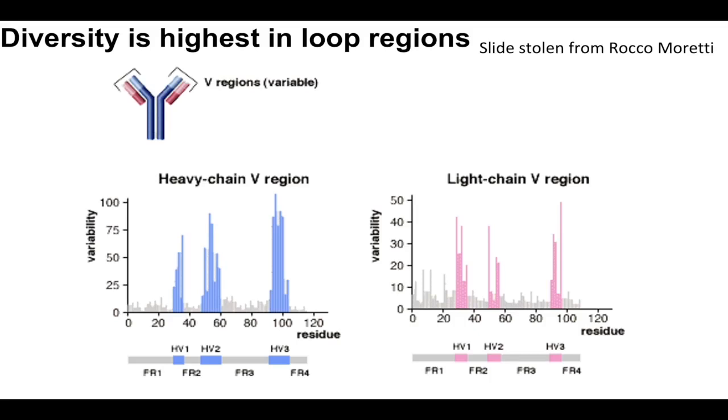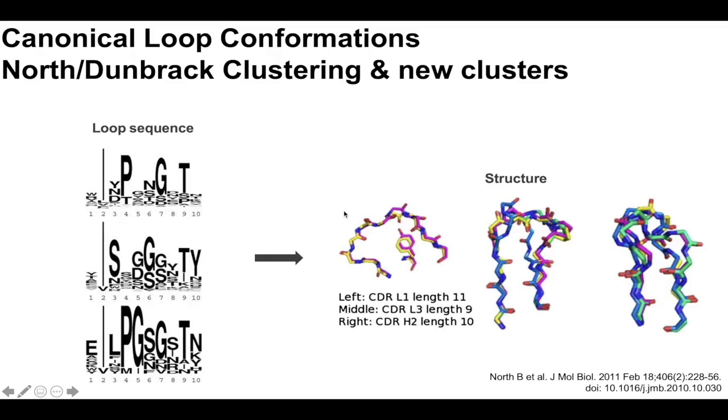So you probably saw this slide in Rocker's presentation, but it basically just showed that sequence variability for each position in the sequence was much higher for the CDRs than within the framework regions. And so fortunately in structure space, these loops are somewhat more conserved than they are in sequence space.